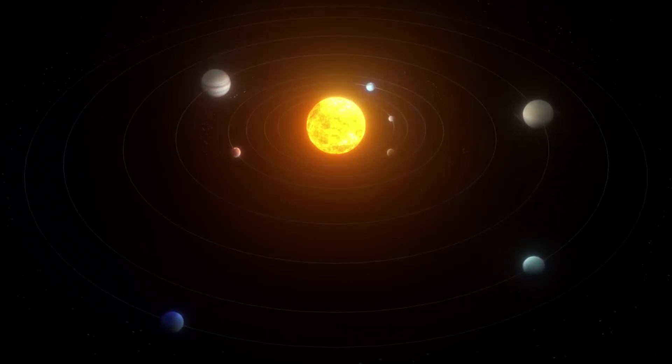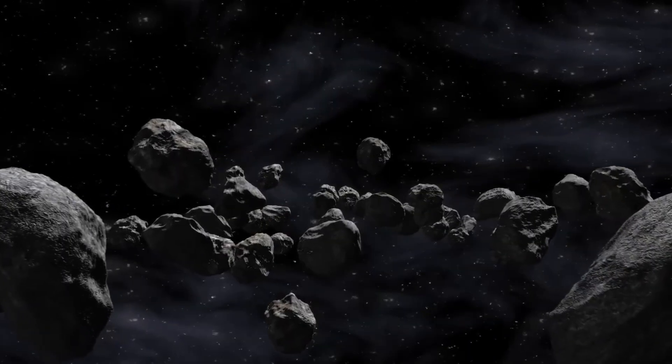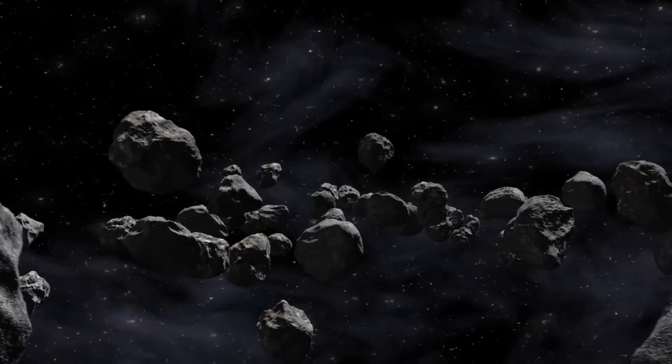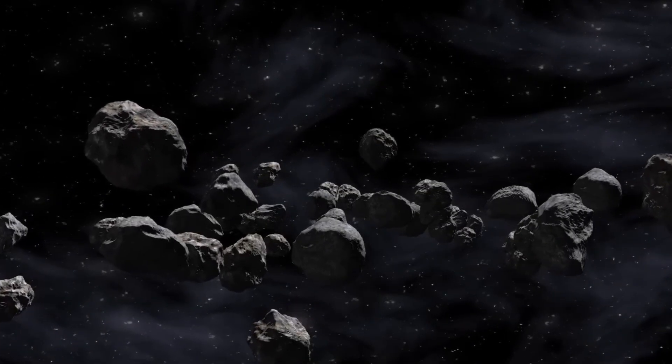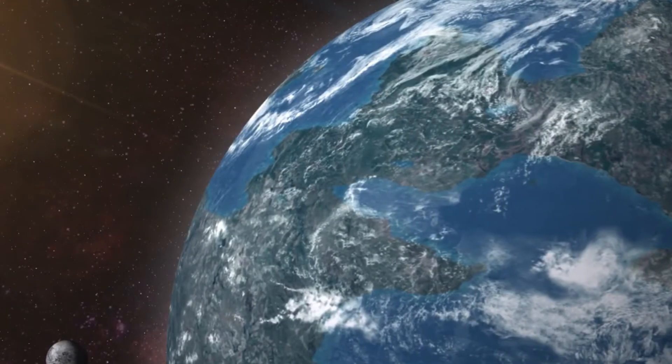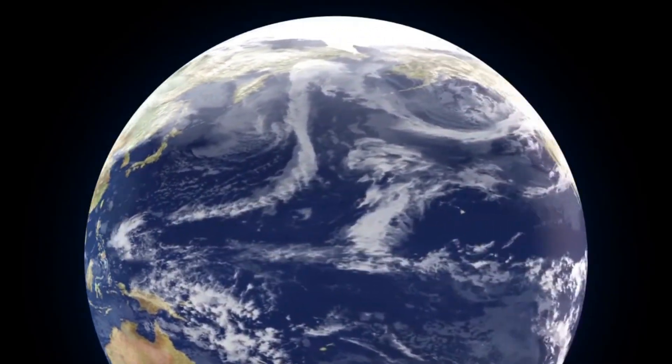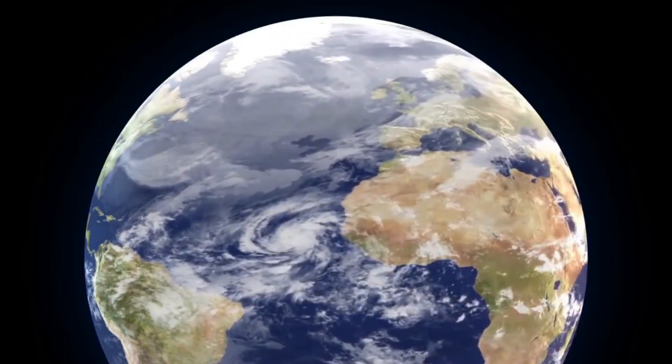Let's start with what the establishment does get right. Our solar system did indeed form from a swirling primordial cloud of gas and dust. As this material collapsed under gravity, conservation of angular momentum forced most of it into a spinning disk. This created what astronomers call the ecliptic plane, essentially the flat region where most planets orbit.